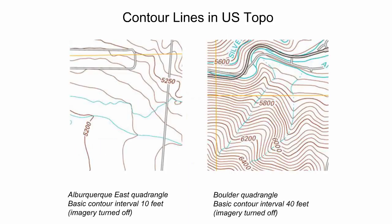These examples demonstrate different contour intervals between two US Topo quadrangles, each with the standard scale of 1 to 24,000. While the elevation changes are drastically different between the two quadrangles, USGS is consistent in their cartographic representation of index contours. Every fifth contour line is an index contour, meaning the contour is labeled with the elevation and bolder than the intermediate contours.